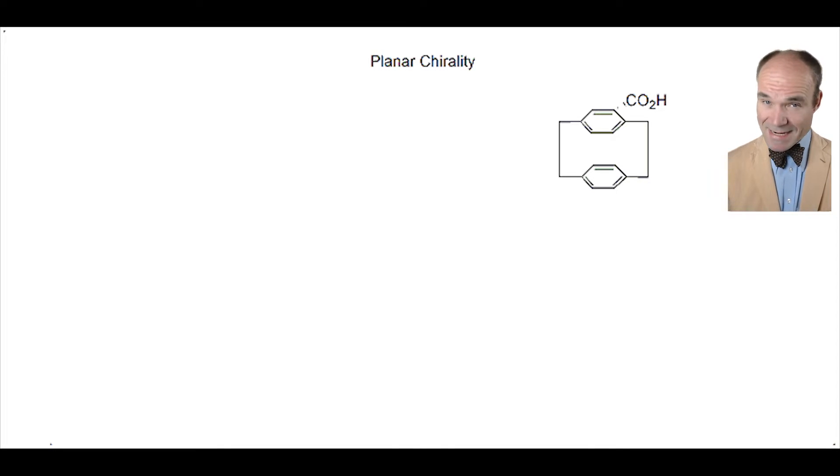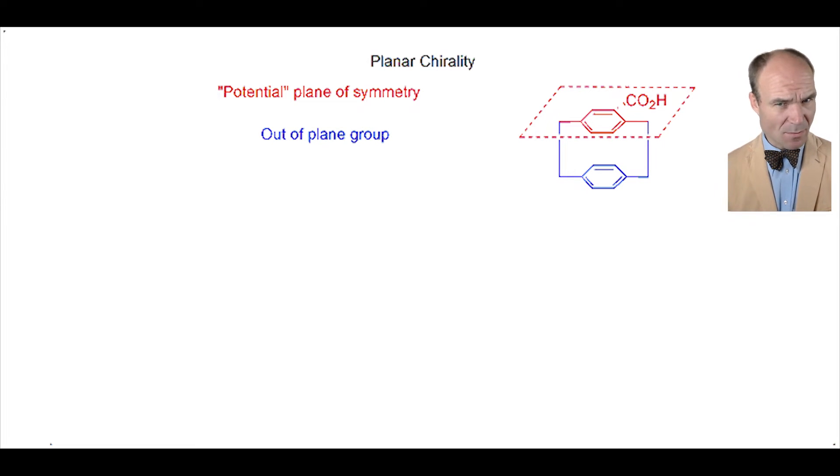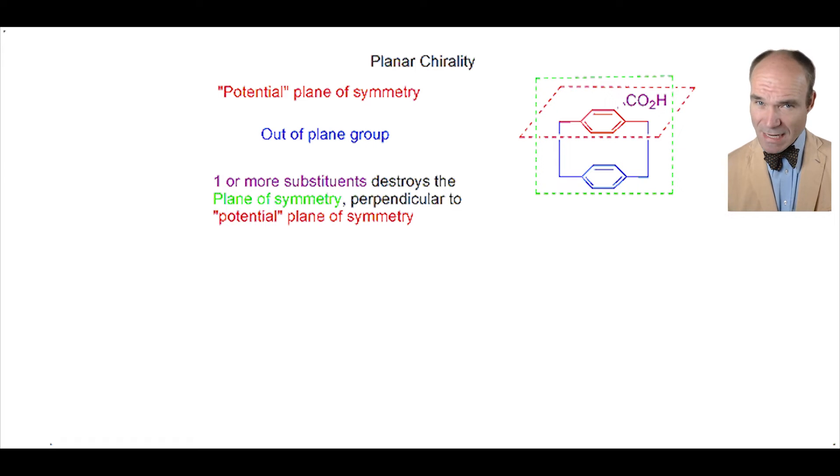Molecules with planar chirality would have a plane of symmetry if it weren't for an out-of-plane group. At least one substituent is attached to that potential plane of symmetry that destroys a plane of symmetry perpendicular to the original plane.